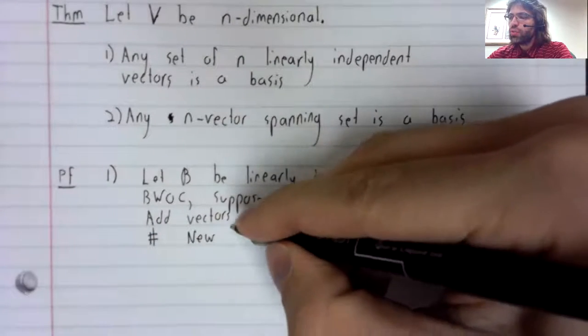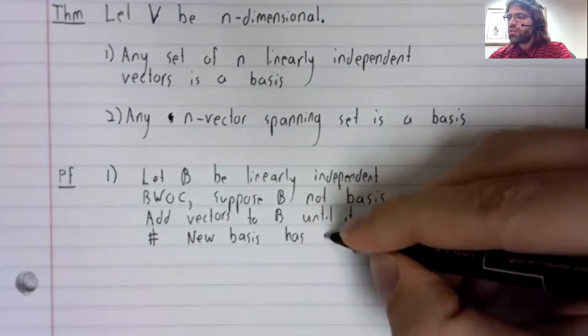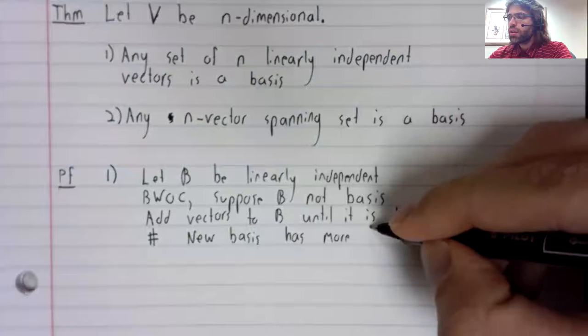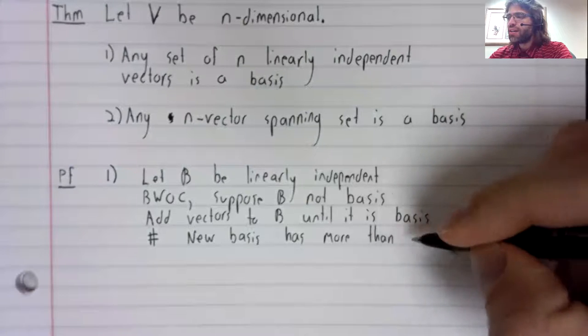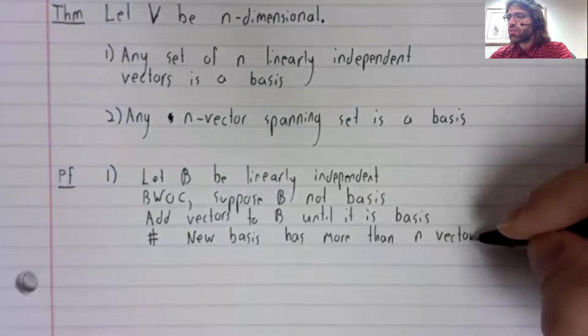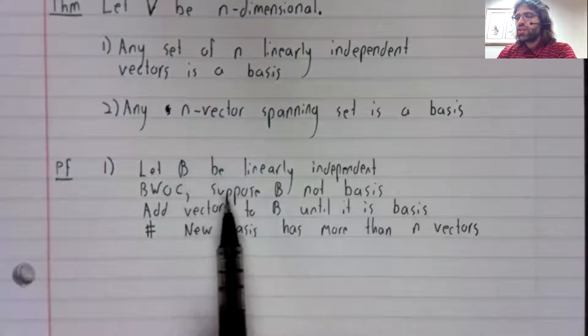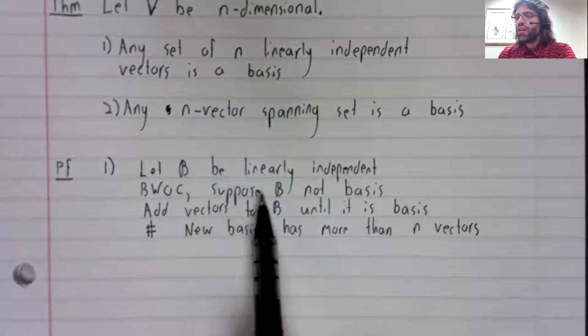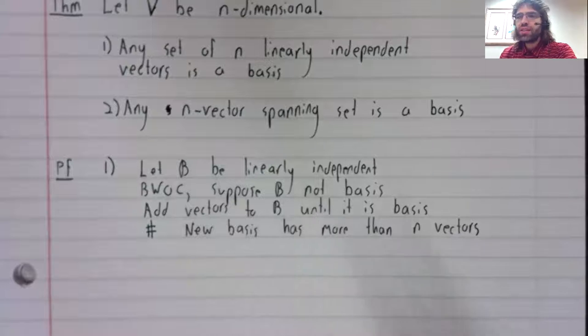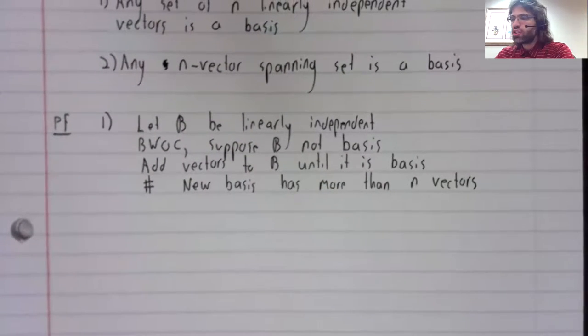This new basis has more than n vectors. So this supposition that B is not a basis must have been a false supposition.